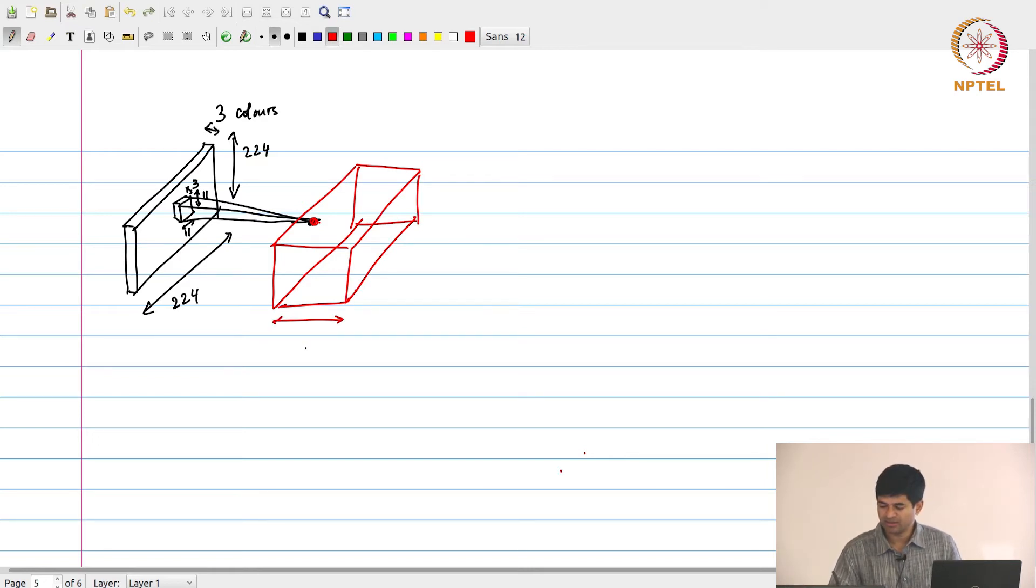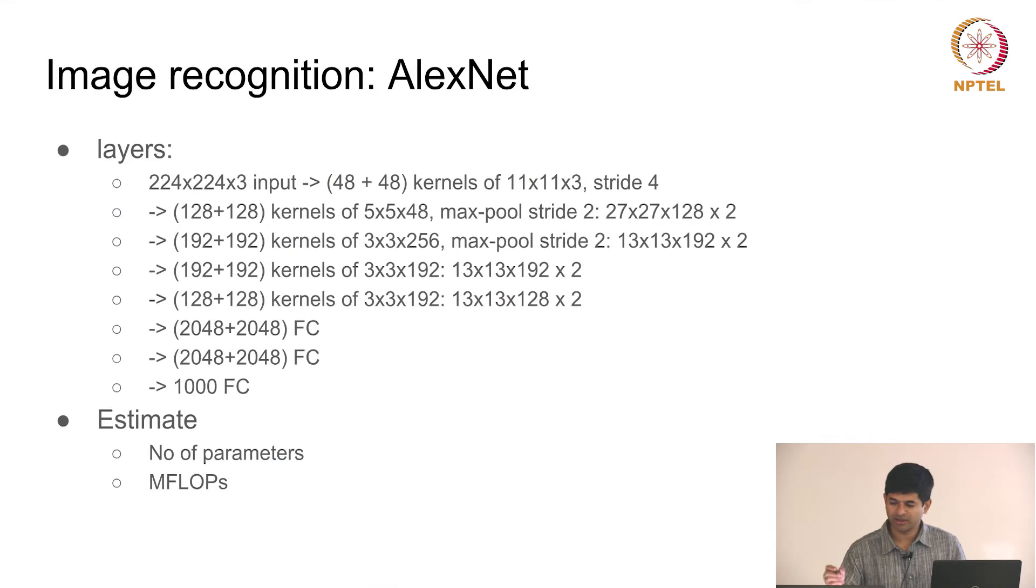This could be something like 96 different elements. Essentially the 224 cross 224 cross 3 input image is put through 96 kernels of 11 cross 11 cross 3 with a stride of 4. I am not going to go into the details because it will take too much time; we will get to this later and actually go through the calculations at one point.